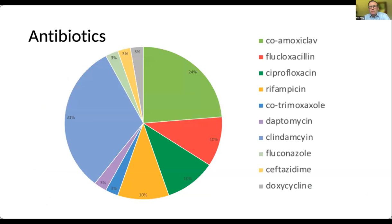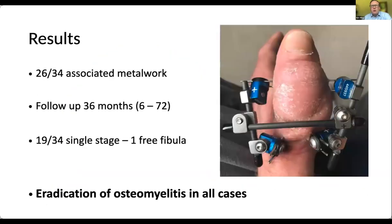We were able to treat patients well with oral antibiotics. The vast majority of antibiotics were delivered orally; we like to use medications like clindamycin because they have very good bone penetration — and this is why we have microbiologists to help decide what antibiotic to use. 26 of our 34 patients had metalwork in situ, and we have follow-up out to five years in some patients. We've only needed to use one free fibula, and we were able to eradicate osteomyelitis in all of our patients.